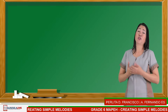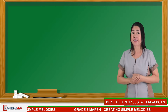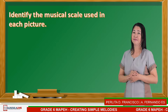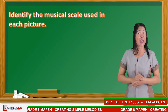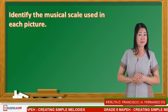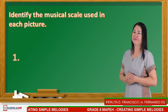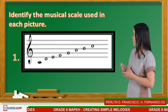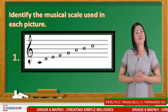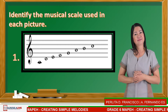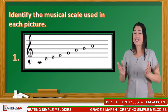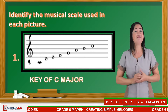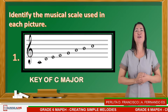Class, do you still remember our lesson about musical scales? Can you identify the musical scale used in each picture? Number one — what musical scale is shown in this picture? Very good — key of C major! Next, number two.